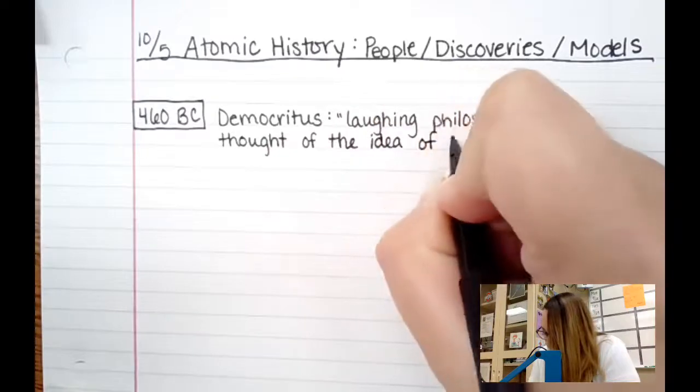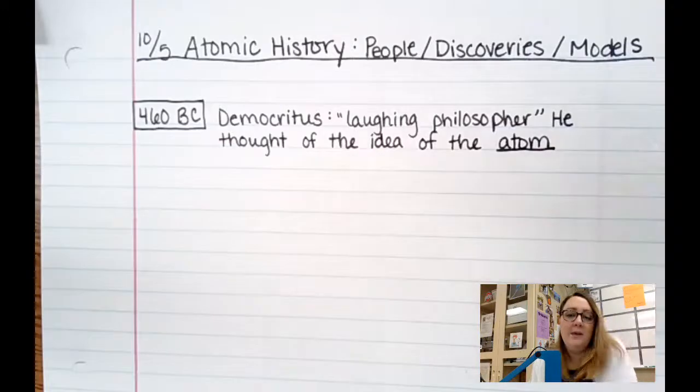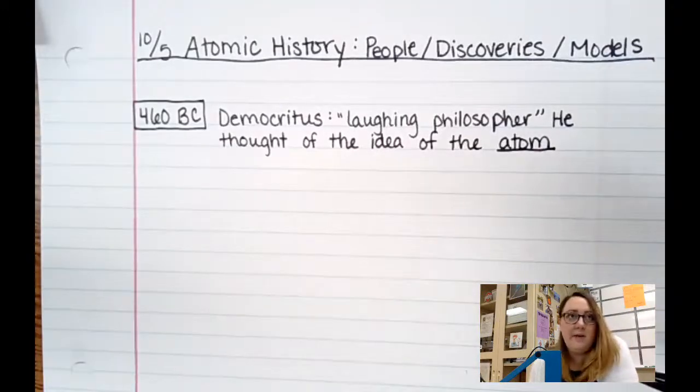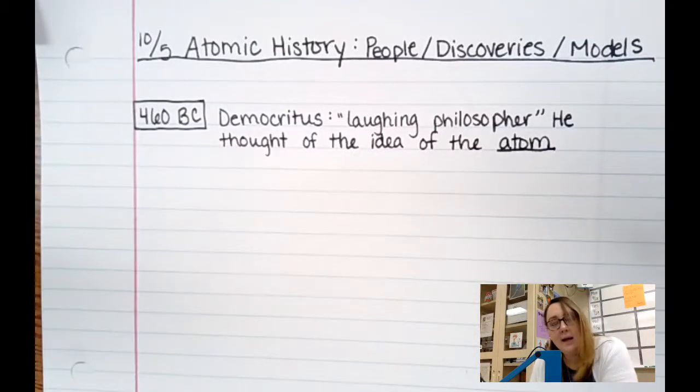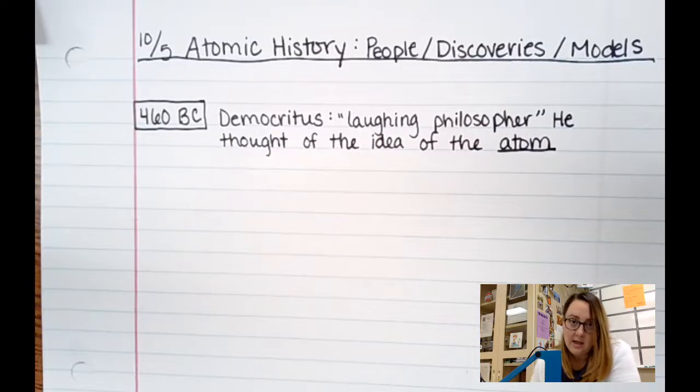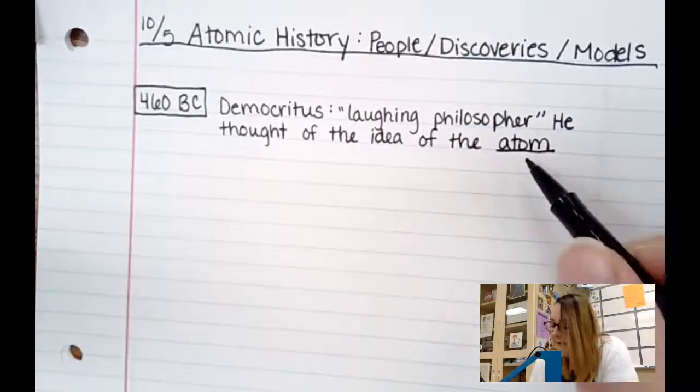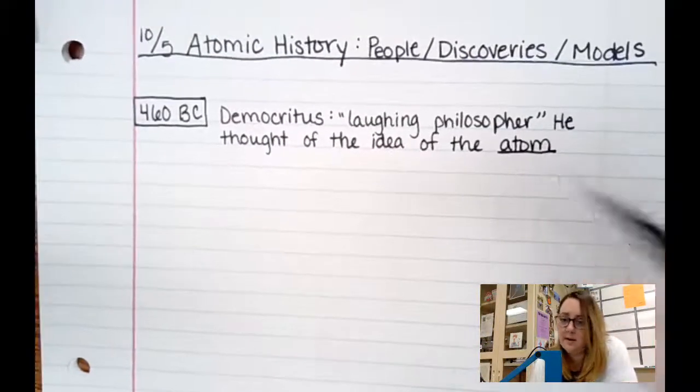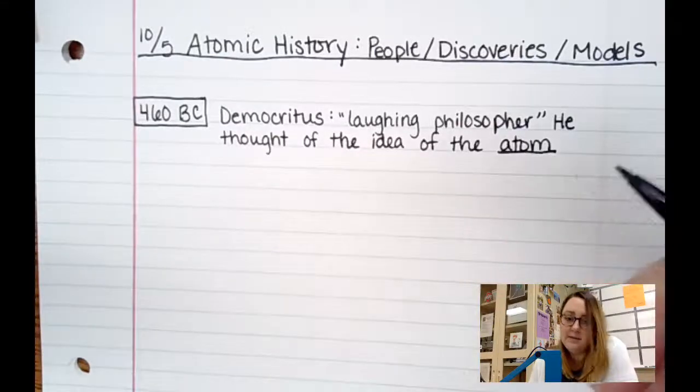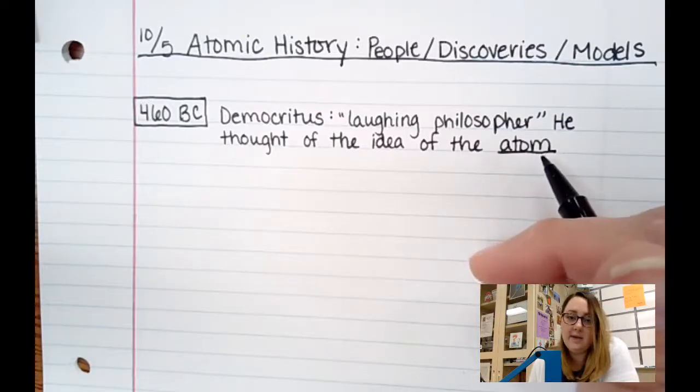He thought of the idea of the atom. He was thinking, okay, if I have this object and I break it in half and then I break it in half again and again and again, am I ever going to reach a point where I can't break it in half again? He thought eventually you'd have to reach that point. And what should we call the smallest thing? The smallest thing is atom. And when you look at the Greek derivative of what that word means, pretty much means the smallest part.